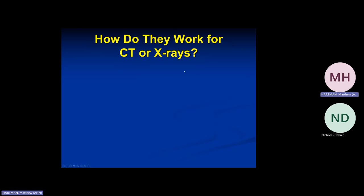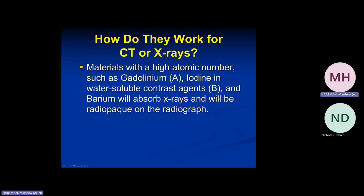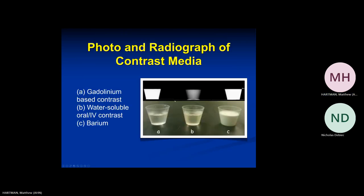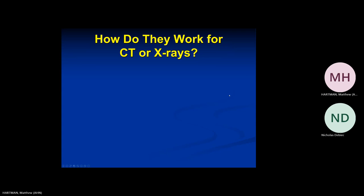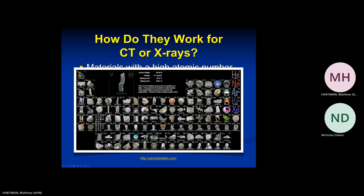Why do these agents work for CT or x-rays? These materials all have a high atomic number. These high atomic number elements will absorb the x-rays and will be radio-opaque on the radiograph. Here's our periodic table and the three agents we use — barium, iodine, and gadolinium — all high atomic number elements.